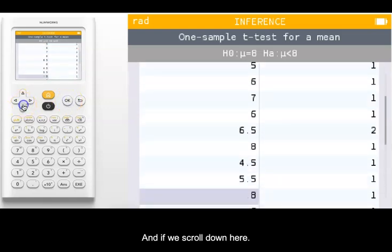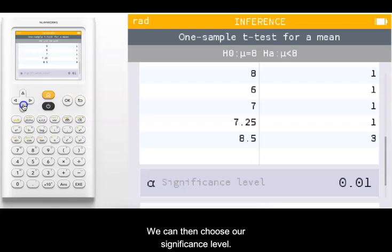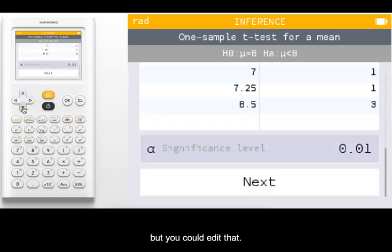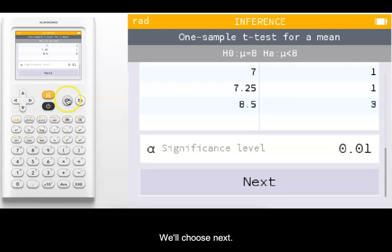If we scroll down here, we can choose our significance level. I have it already entered as 0.01, but you could edit that. We'll choose next.